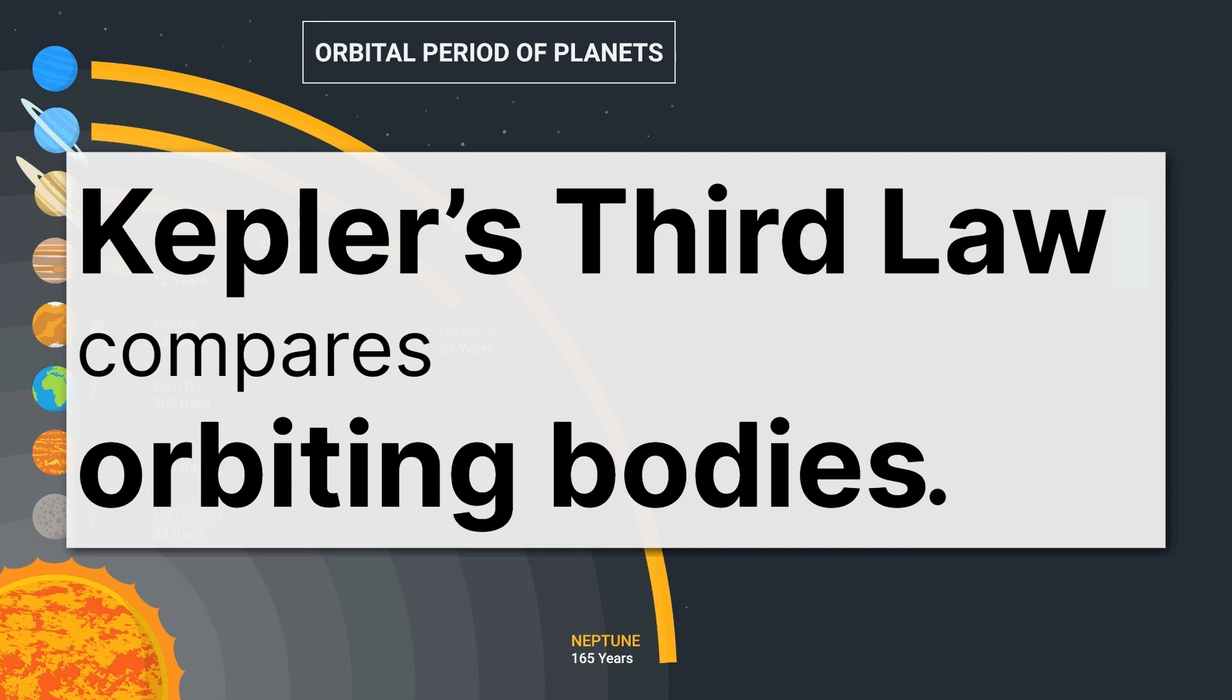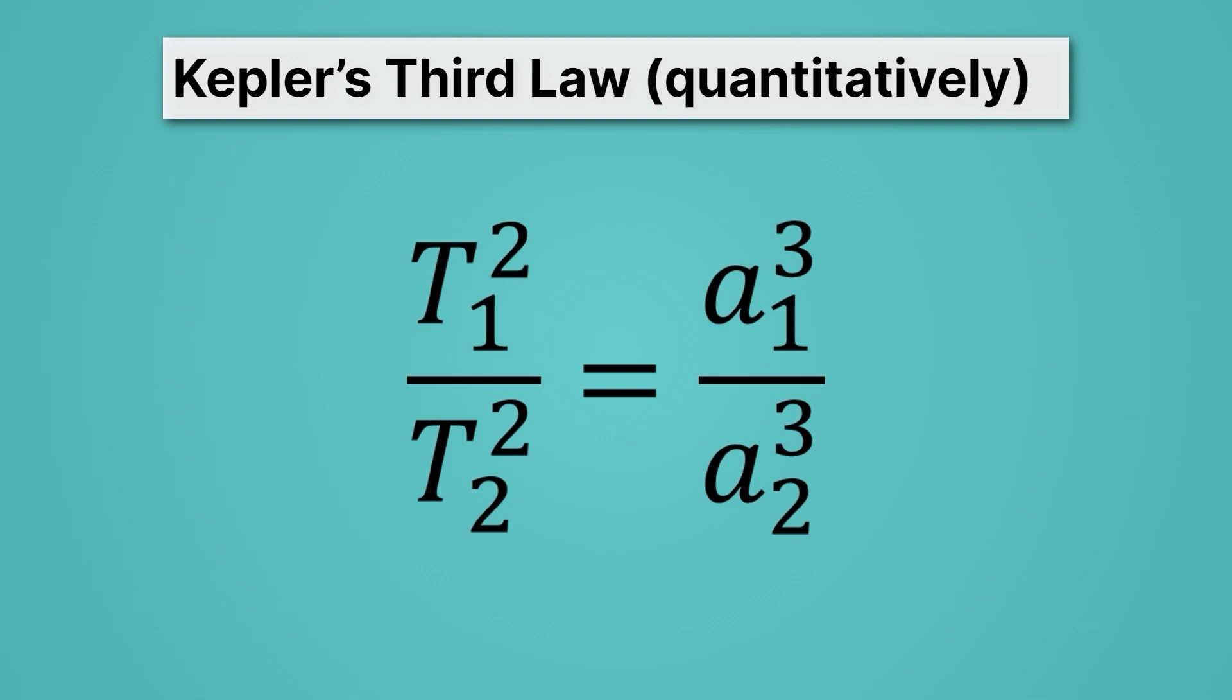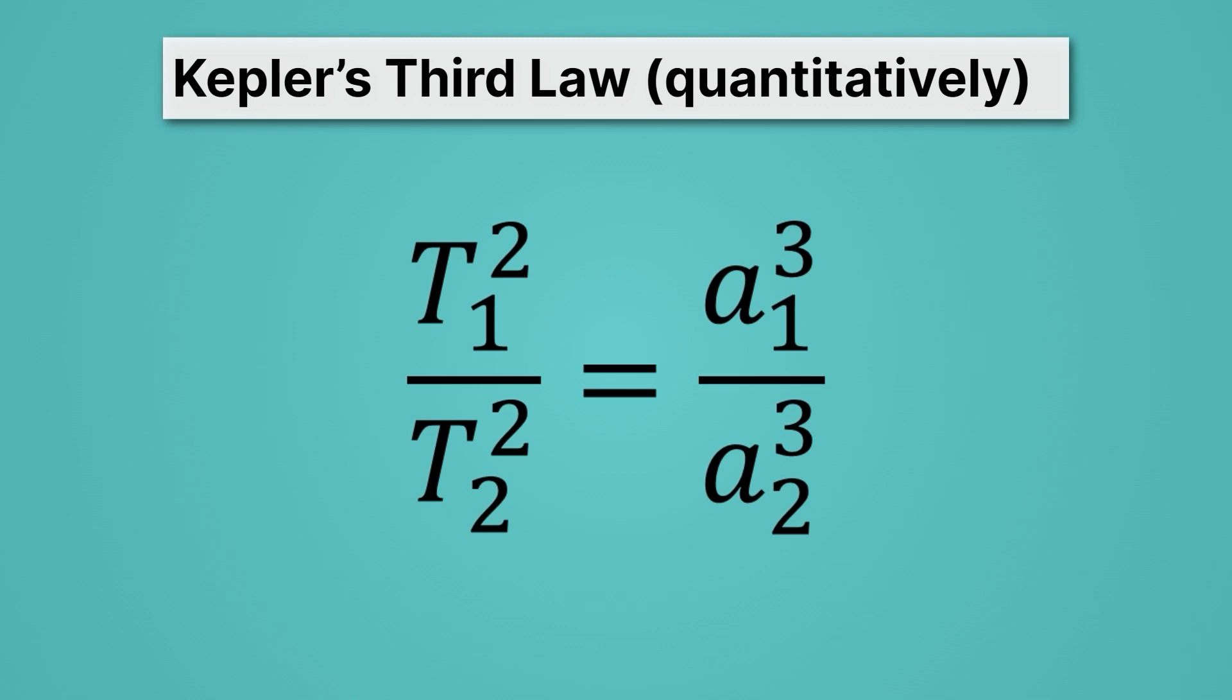Now we're going to look at Kepler's third law quantitatively. Whoa, that's a lot. I'm going to give you a second just to look at it, and be like, ah, lots of numbers, lots of symbols. Don't worry, it's okay, we'll go slow. Alright, are you ready? Well, that top row there is just talking about the orbital period of our first object and the semi-major axis of our first object. Maybe we're talking here about the planet Earth. And the bottom row is talking about the orbital period of our second object and the semi-major axis of our second object. Maybe here we're talking about Neptune, which takes forever to orbit our Sun.